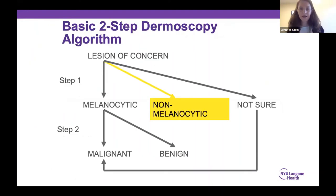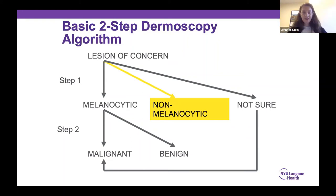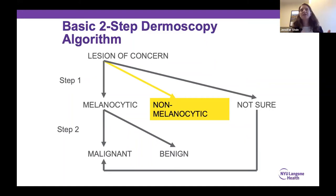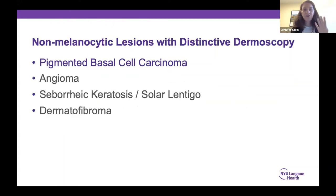Now moving on to non-melanocytic lesions. Unlike melanocytic, non-melanocytic is an umbrella term for everything else — seborrheic keratoses, basal cells, angiomas, and everything else. You get to this category by identifying specific diagnostic features directly; you don't first say 'it's non-melanocytic' and then figure out what it is. You go directly to your diagnosis. We're going to cover four high-yield patterns that are easy to learn and things you'll see all the time.